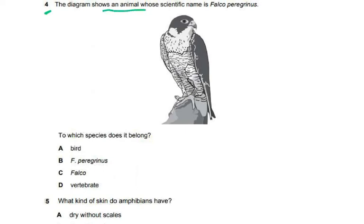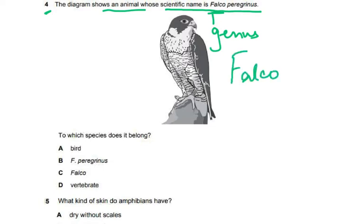Question four: the diagram shows an animal whose scientific name is Falco peregrinus. In binomial nomenclature, the genus always comes first with a capital letter — here Falco — and the species second in lowercase italics — here peregrinus. D comes before S in the alphabet, so the genus is Falco. The answer is B, as that is the only option containing peregrinus as the species.